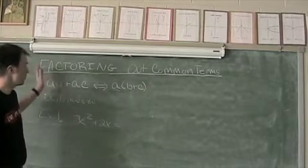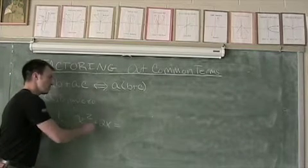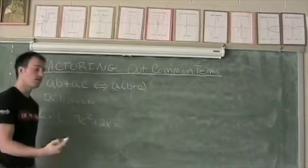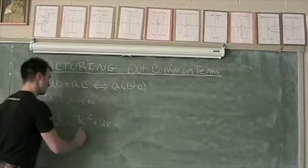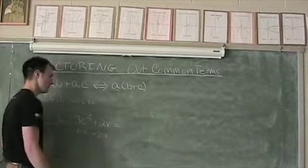What we're looking for when we're factoring out common terms is something that's present in both of these terms. Well, x squared is actually x times x, and we're talking about two times x.